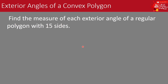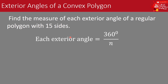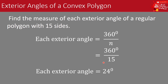Find the measure of each exterior angle of a regular polygon with 15 sides. Using the formula: each exterior angle equals 360 degrees divided by n, where n is the number of sides. We substitute n with 15: 360 degrees divided by 15 equals 24 degrees. Therefore, the measure of each exterior angle of a regular polygon with 15 sides is 24 degrees.